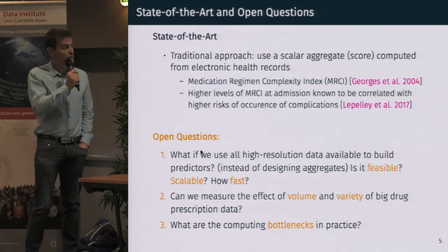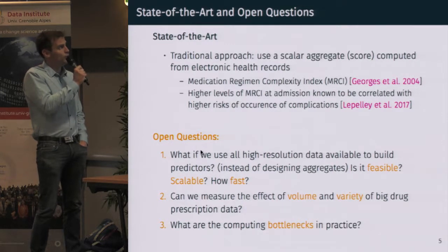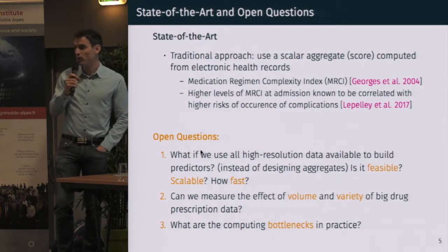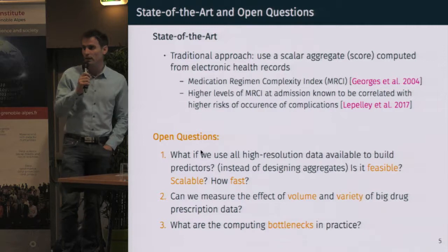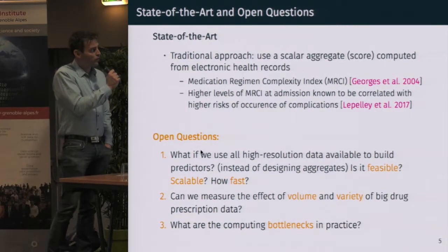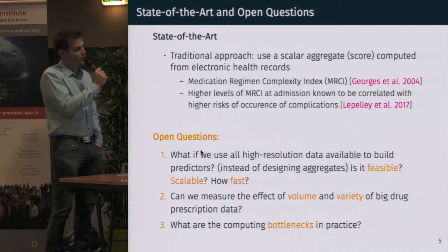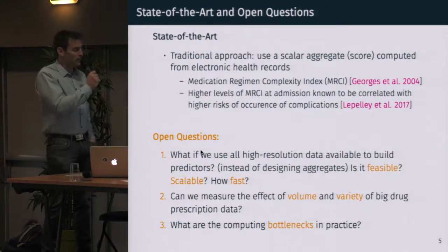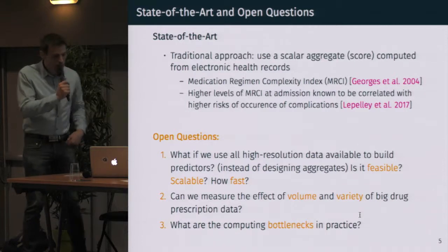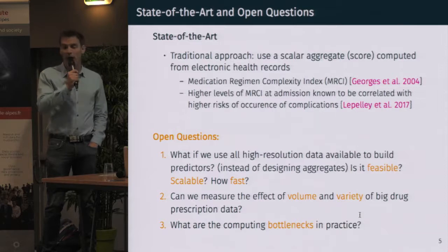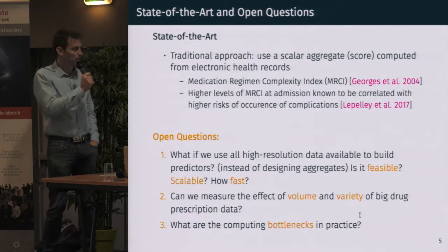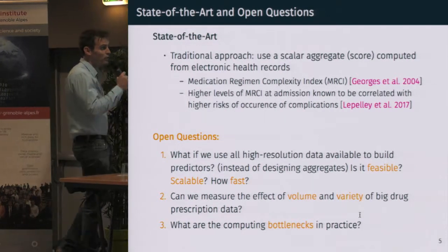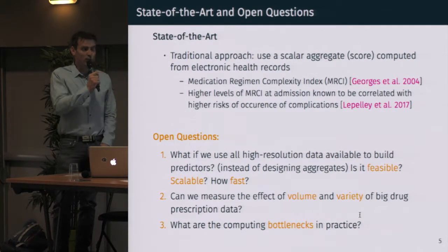There were some previous studies about this. In the state of the art, the most commonly used approach is to use scalar aggregates, or scores, computed from electronic health records. The MRCI, for Medication Regimen Complexity Index, is an example of such a score. It is known that higher levels of this kind of scores at admission are correlated with higher risks of complications. The main open question we consider here is: what if, instead of designing aggregates, we use whole high-resolution data to build predictive models? Is it feasible, scalable, and fast? Can we measure the effect of volume and variety of big data in this context, and what are the computing bottlenecks in practice?